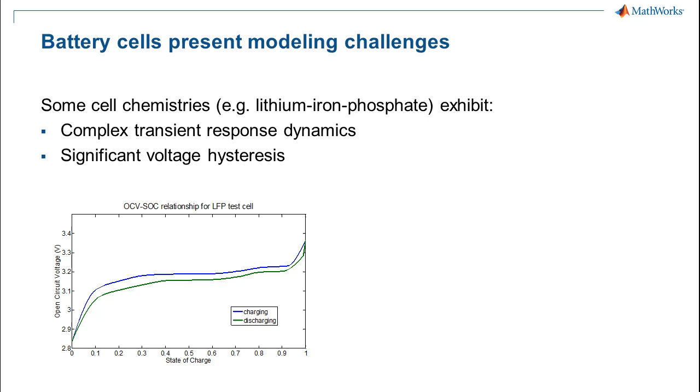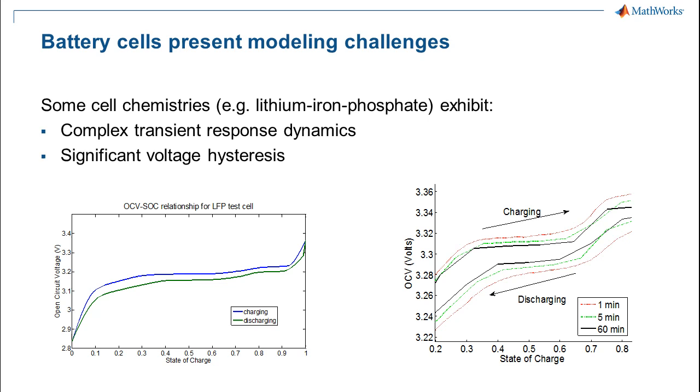To get an accurate SOC estimate, we need a very accurate voltage measurement. Hysteresis means that at the same SOC, the open circuit voltage depends on whether it was charging or discharging last. The open circuit voltage you measure will depend on the recent history of the battery. The amount of rest time has an effect on the open circuit voltage. If you waited long enough, the voltage would be at a steady state value for any given SOC, regardless of history.